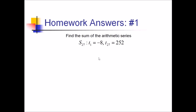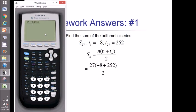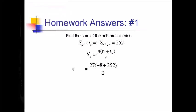We have n times T1 plus Tn over 2. For n, we've got 27, that's the number of terms. T1 is negative 8, Tn is 252. Let's plug it all in, and it's calculator time. I'll just plug all of that in using my fancy alpha y equals fraction format. That's 3,294.